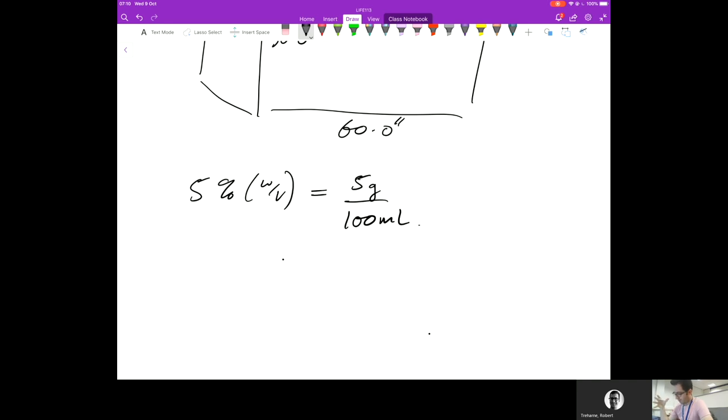We essentially need to figure out how much sodium chloride we need to add to our tank, assuming it's going to be full, to get a 5% weight/volume concentration. The first thing we have to do is work out the volume of the tank. I've given you the volume in inches, so we have to convert that to liters.